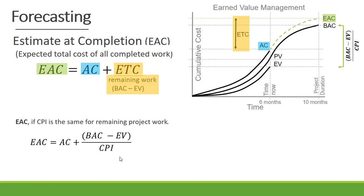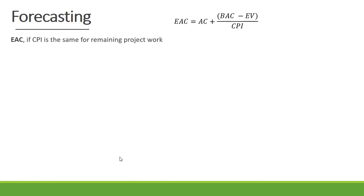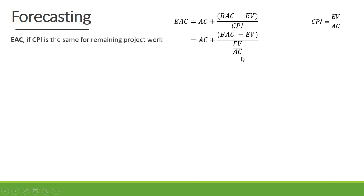When we simplify the formula we get estimate at completion equals budget at completion divided by CPI. So let's do the simplification. It is our actual cost plus budget at completion minus earned value, divided by CPI. Now the CPI is earned value divided by actual cost, so let's replace CPI with earned value divided by actual cost.